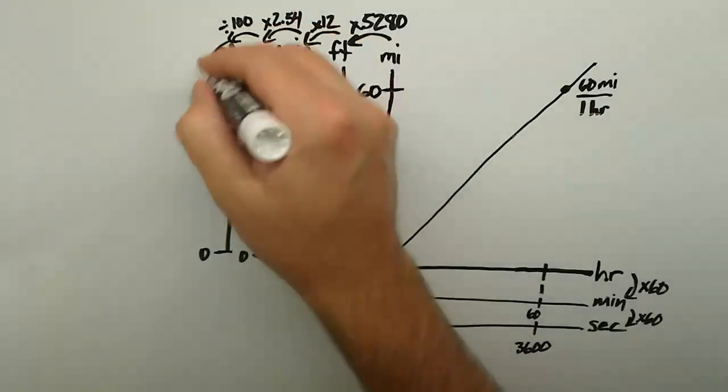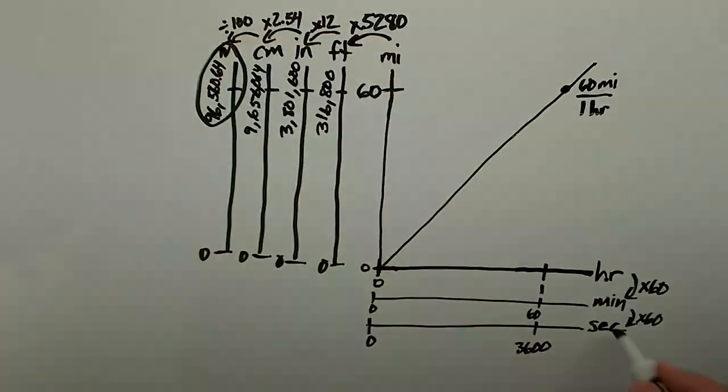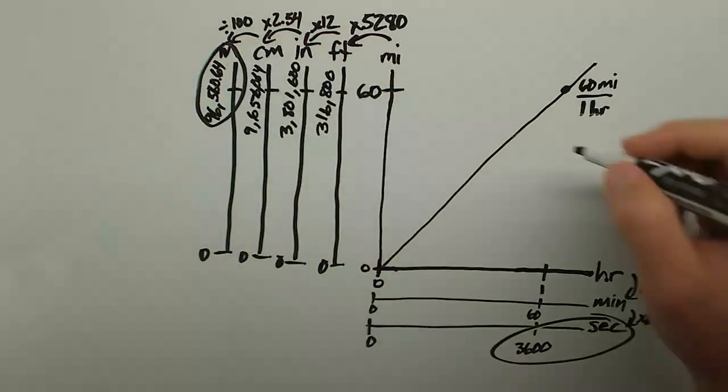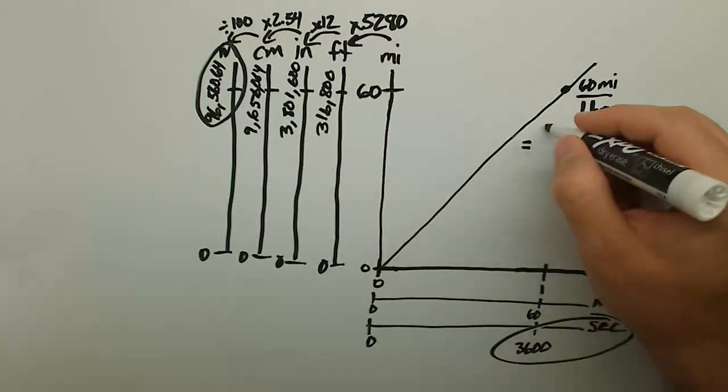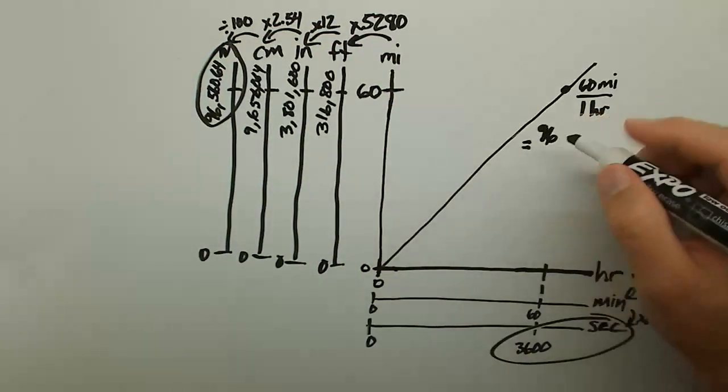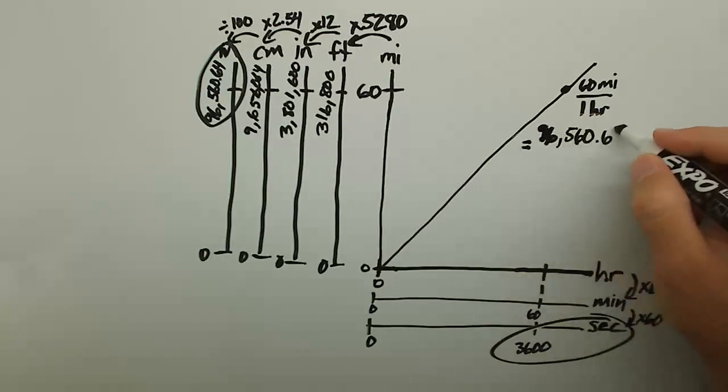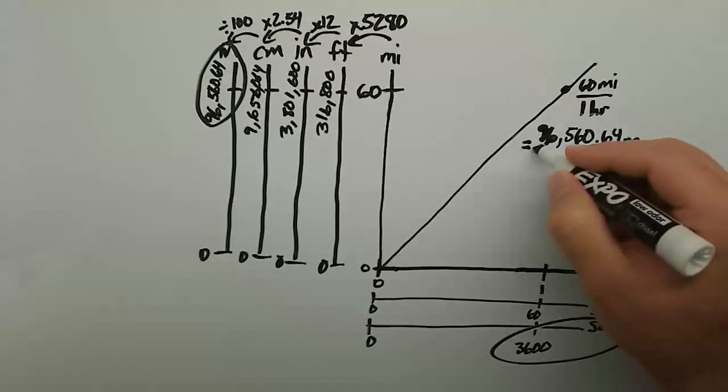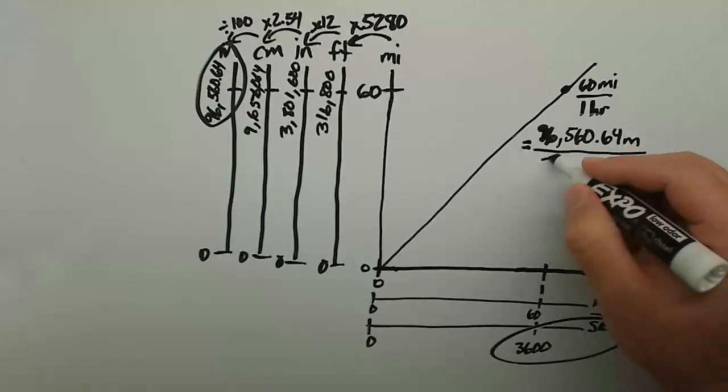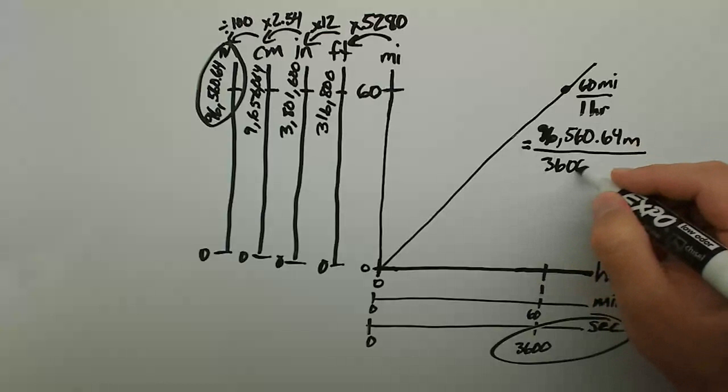With my time and distance conversions complete, I can use the fact that 60 miles is 96,560.64 meters, and 1 hour is 3600 seconds, to rewrite 60 miles per hour. Unsimplified, the conversions work out to be 96,560.64 meters per 3600 seconds.